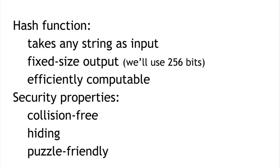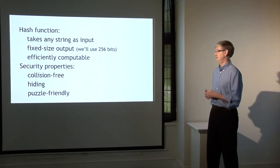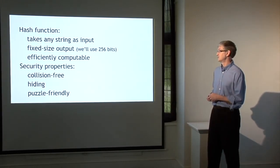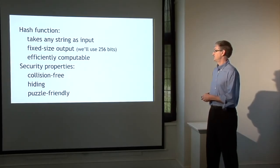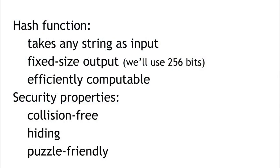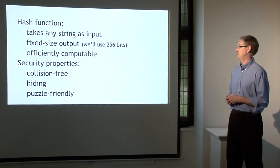We're going to need hash functions that are cryptographically secure. The cryptographic properties of hash functions are a complicated topic in general, but we're going to focus on three particular properties: that the function is collision-free, that it has a hiding property, and that it's puzzle-friendly. For each of these, I'll talk about what the property is, what it means, and then why it's useful to have a function with that property.